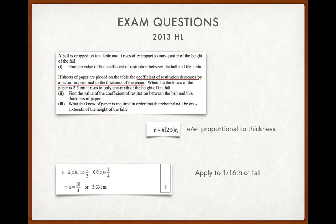So, I get the original coefficient of restitution without the piece of paper was a half. The constant was 0.6 multiplied by the thickness and multiplied by the coefficient of restitution for the sixteenth of the height of the fall. x then works out as 3.33.